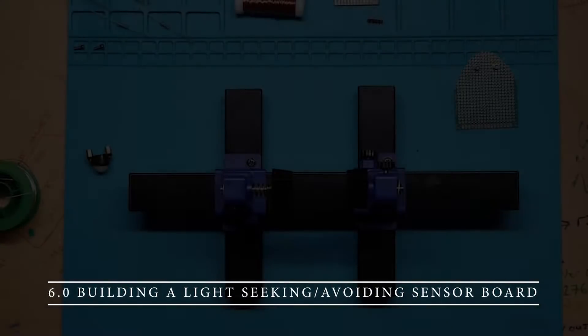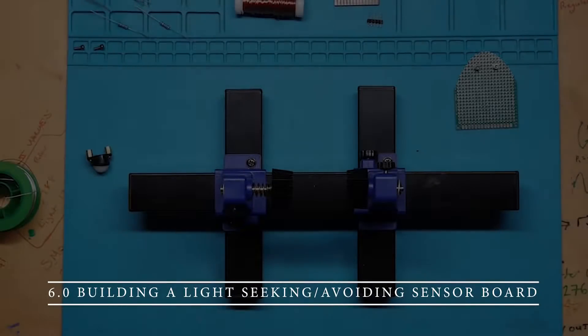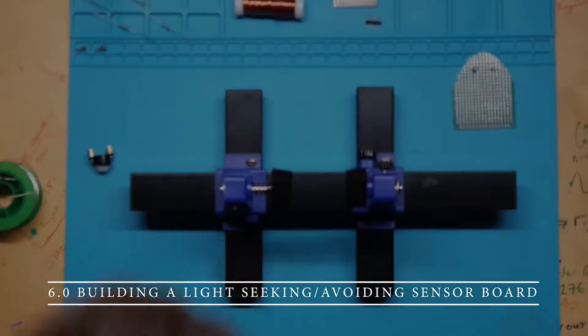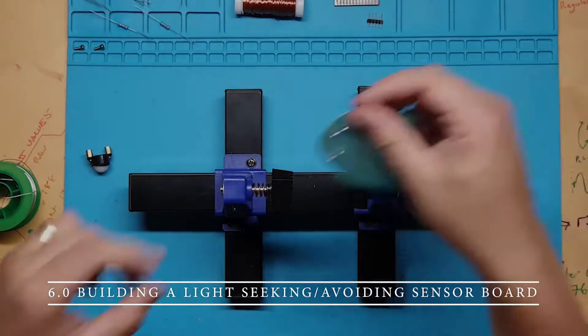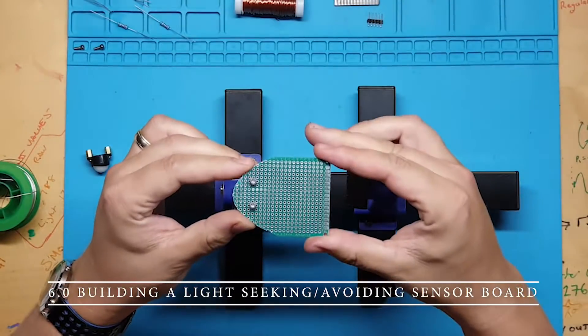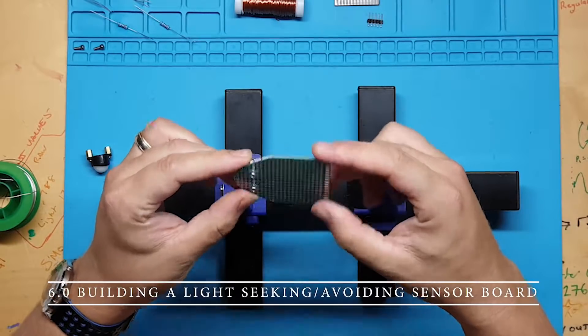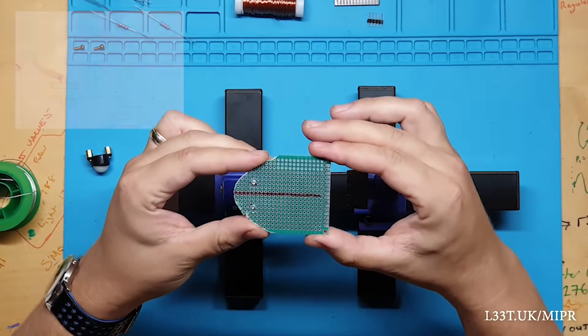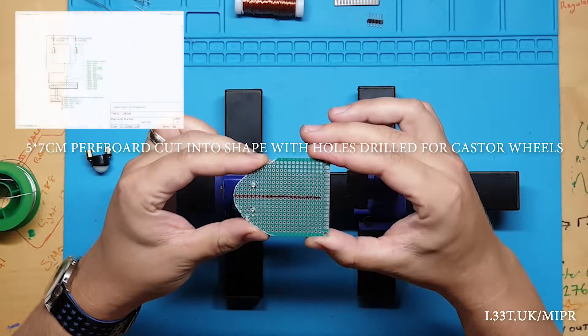Hi guys! Today we will make our first sensor board for Mipper. It will consist of two resistors, two light dependent resistors, and some headers. This will allow us to sense light levels around Mipper. We will then use this information to make Mipper avoid or seek light.